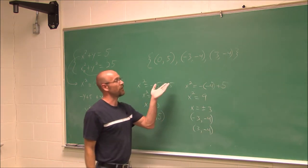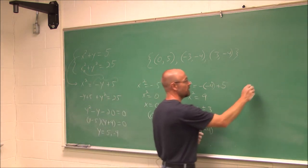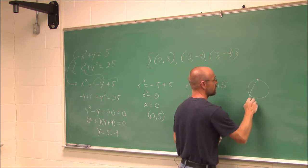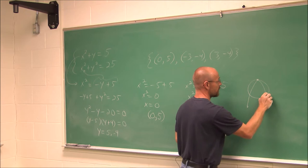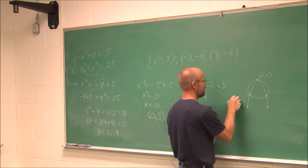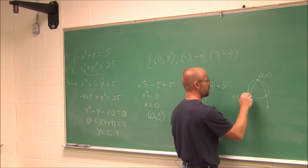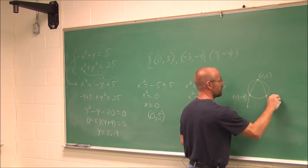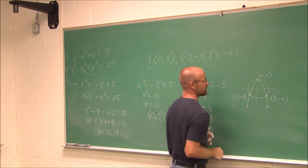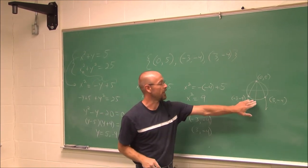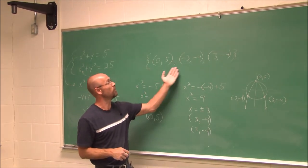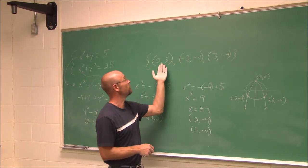If I were to have graphed this, what we would have seen is a circle sharing points with the parabola at (0, 5), (−3, −4), and (3, −4). So that was the three solutions we found, written as a set of ordered pairs.